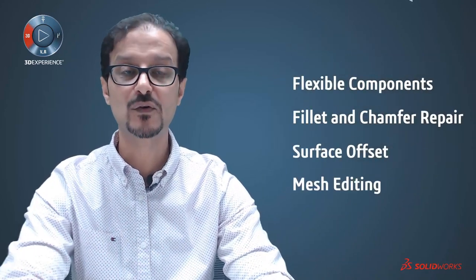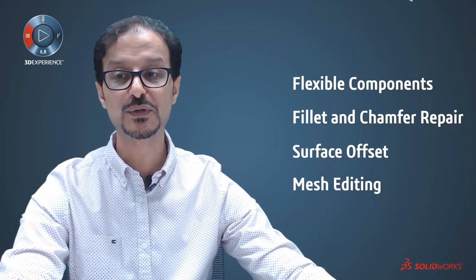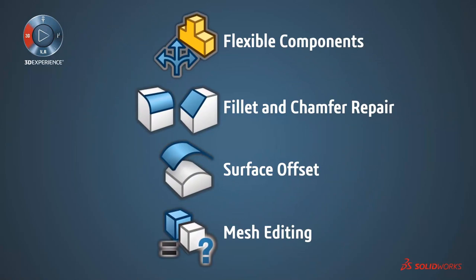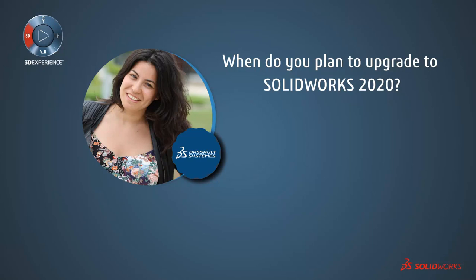We have completed the four topics for today. For flexible components, remember to use this feature whenever you need multiple versions of a file with different geometries without changing the name. Use fillet repair instead of removing missing references. For surface offset, let SolidWorks identify the failing faces. Use direction when thickening surfaces. And the two new mesh editing features: decimation and body compare.